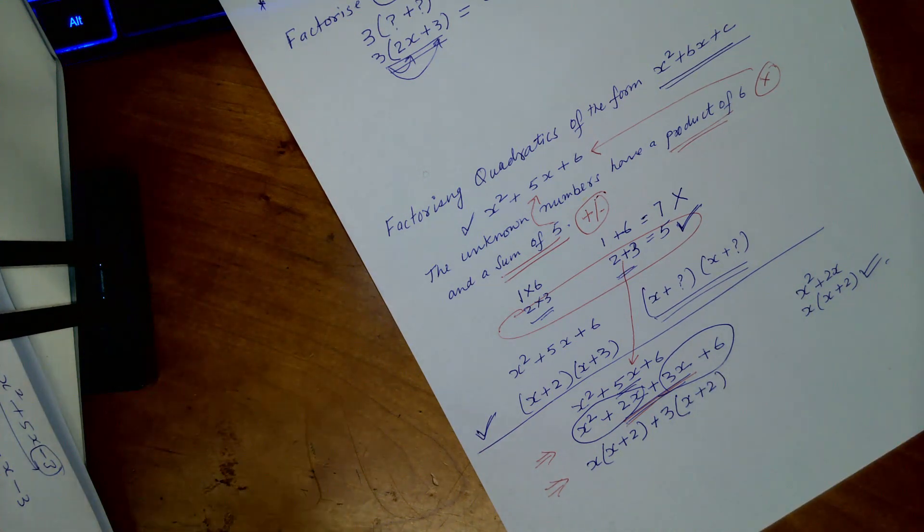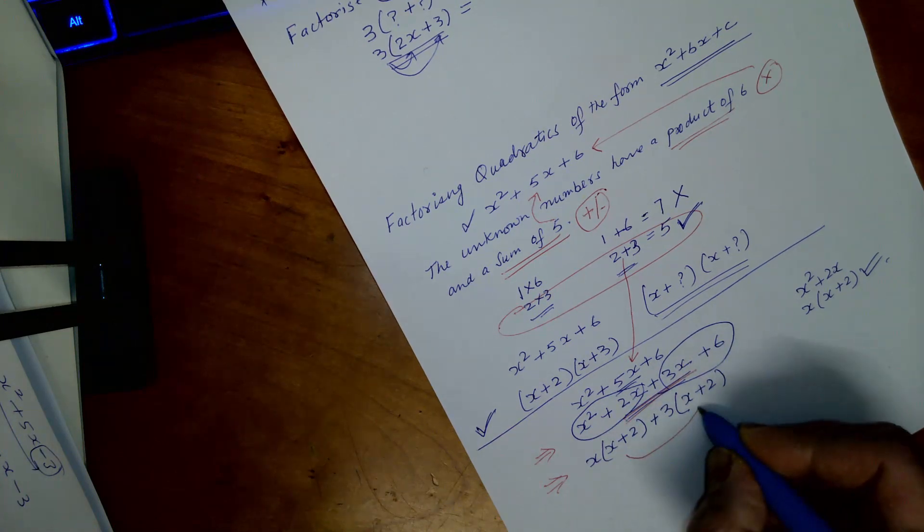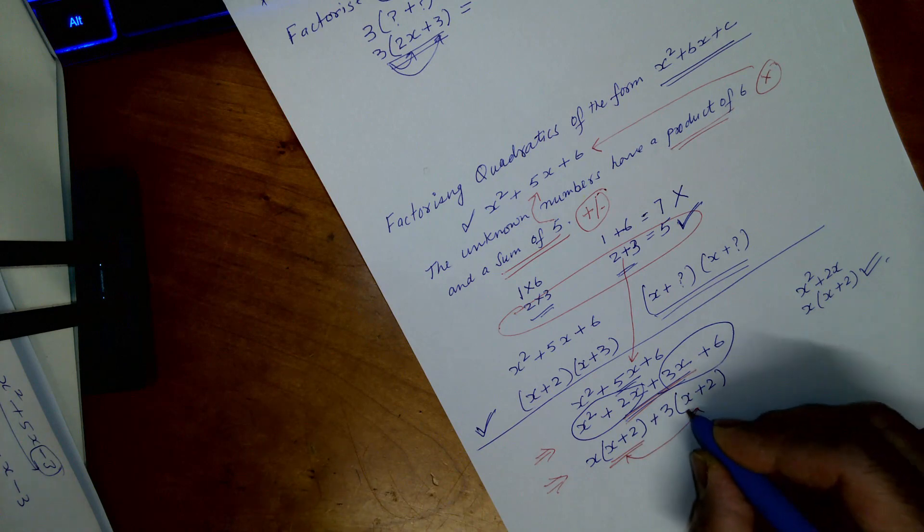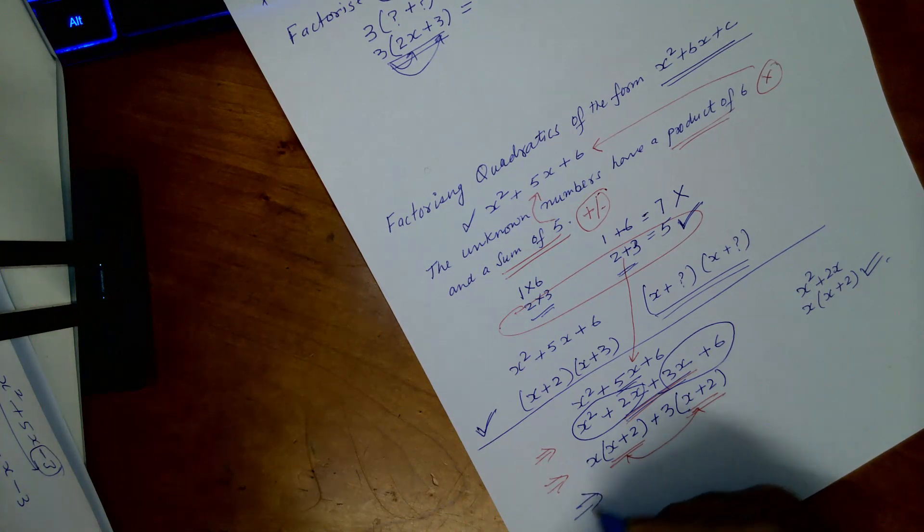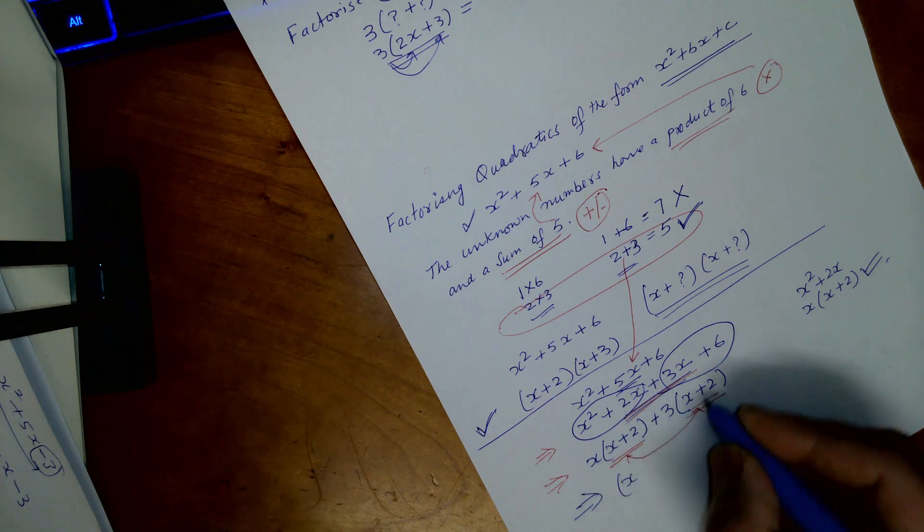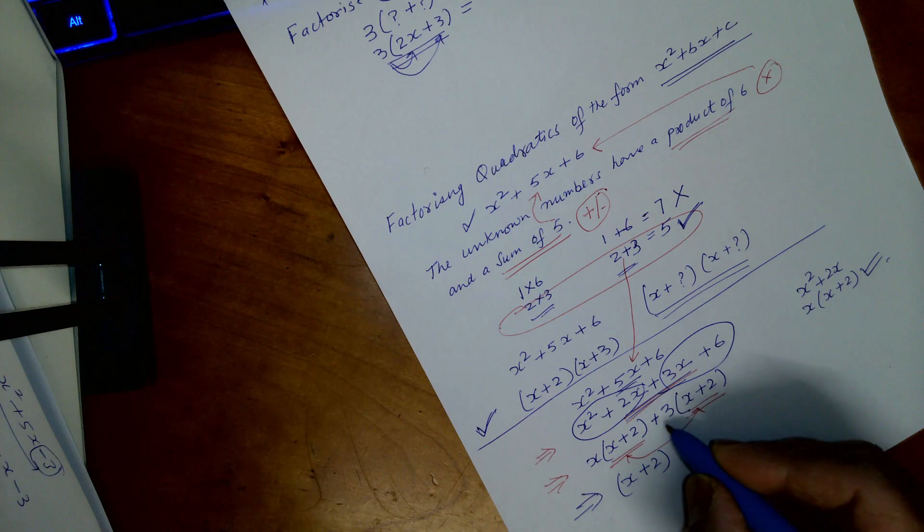Okay, now you see here in this method, you always find these two exactly the same. And then you can further simplify that by writing you have x plus 2, and then you have x plus 3.